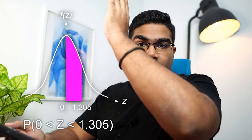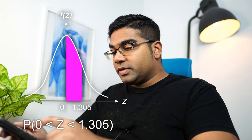Q is for any value from the y-axis to the Z-score. For example, if we wanted to find this area here, between Z is 0 and Z is 1.305, then all you have to do is,